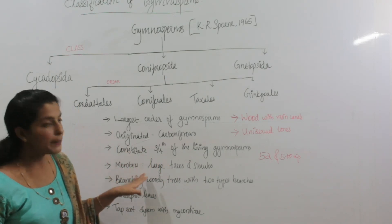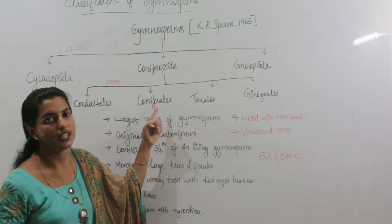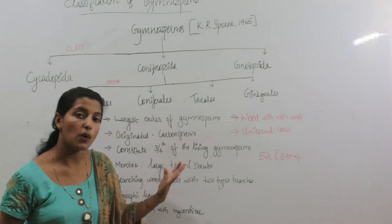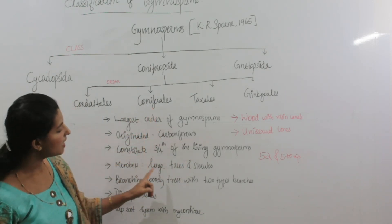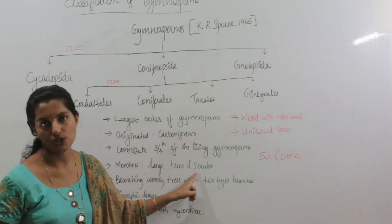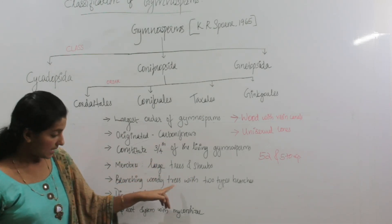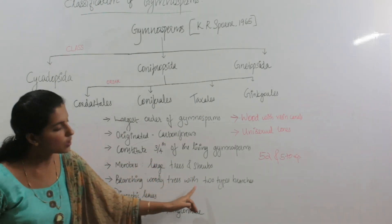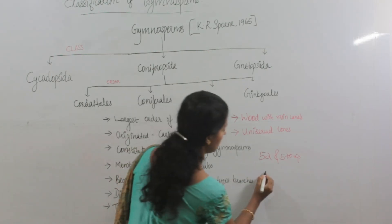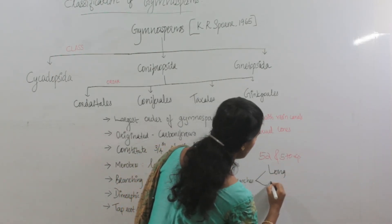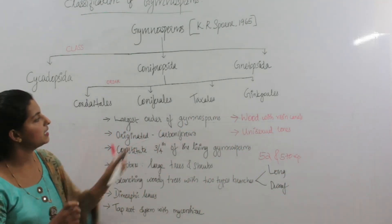The habit of the members: there are large trees and shrubs in this order. The tallest tree in the world, Sequoia sempervirens, comes under this order. In large trees, the stem is monopodial and shows two types of branches: dwarf branches as well as long branches.